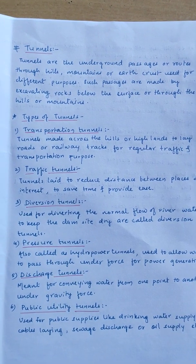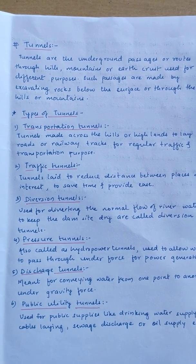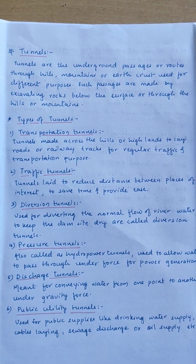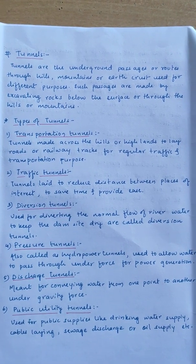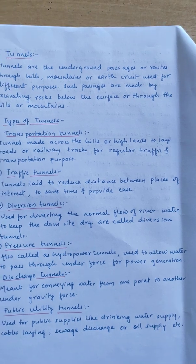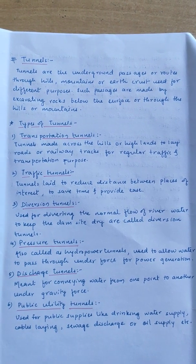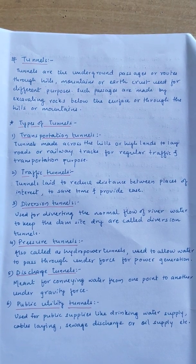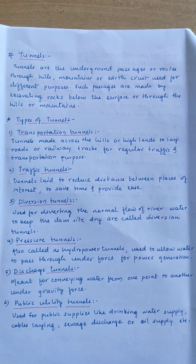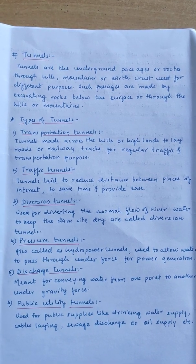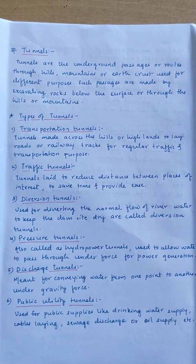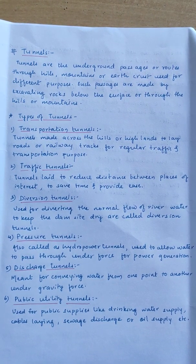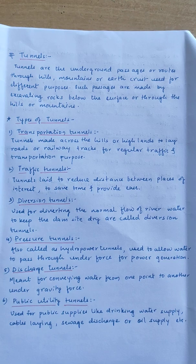There are six types of tunnels. The first type is the transportation tunnel, used for transportation across hills or highlands to lay roads or railway tracks for regular traffic and other transportation purposes. The second type is the traffic tunnel, used to reduce the distance between places of interest to save time and provide ease. The third type is the diversion tunnel, used for diverting the normal flow of water to keep the ramp side dry.